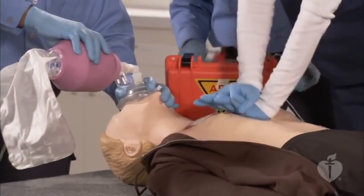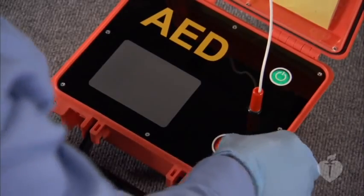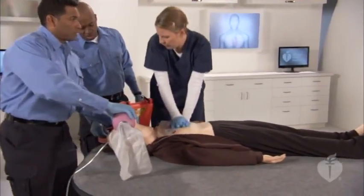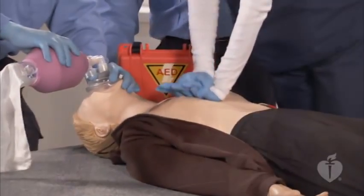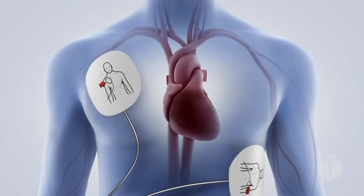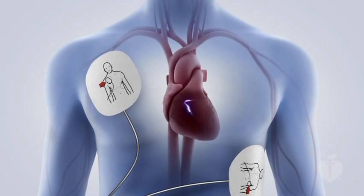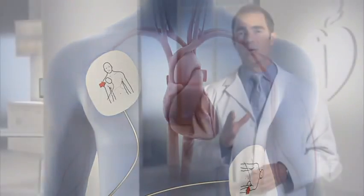Another key step in BLS is providing rapid defibrillation if indicated. Although CPR can provide vital oxygen and blood circulation, defibrillation is essential to establishing a normal rhythm in patients with a lethal shockable rhythm. The delivery of an electrical shock briefly stops all electrical activity in the heart. If the heart is still viable, its normal pacemakers may resume electrical activity resulting in a perfusing rhythm or ROSC. Survival rates are highest when rescuers provide CPR immediately and defibrillation for initial shockable rhythm occurs within three to five minutes. For a patient with a shockable rhythm, every minute without a shock reduces the chance of survival.